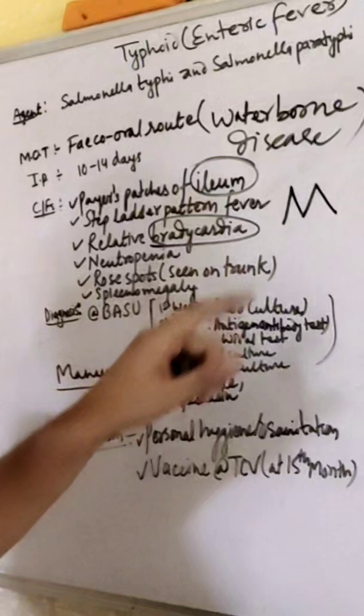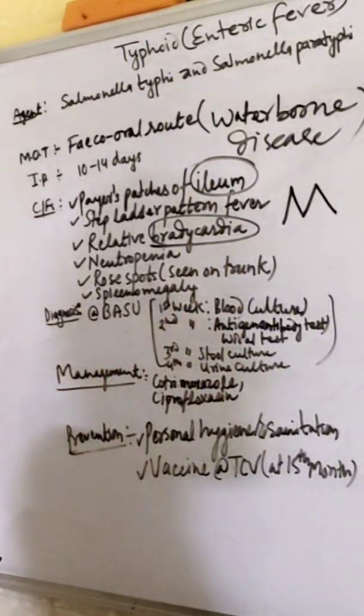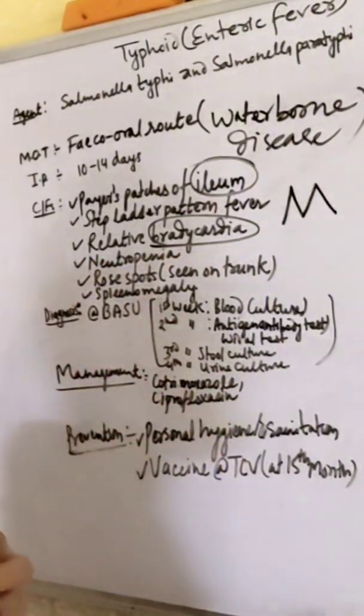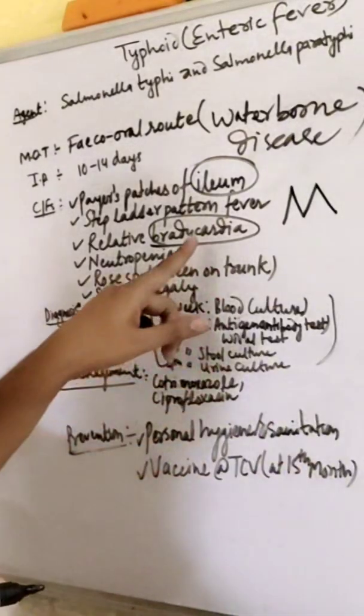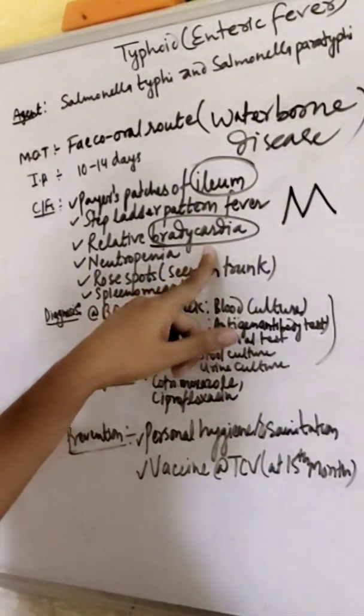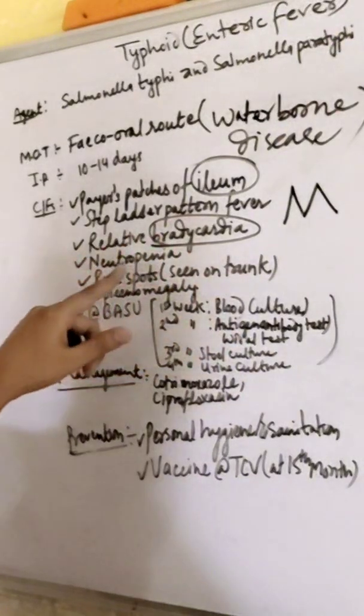Tachycardia is in case of excessive heart beat. Normal heart beat is 72 per minute. In the case of typhoid, the heart beat is less than 72 per minute.